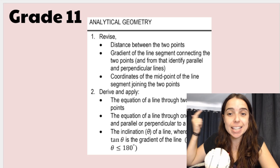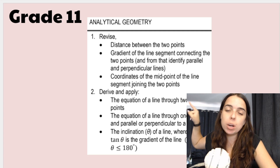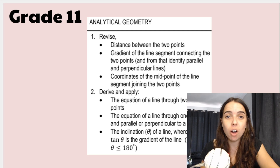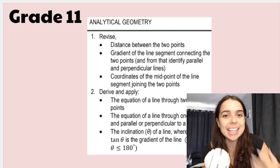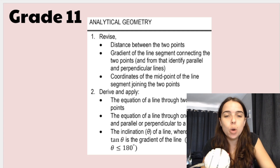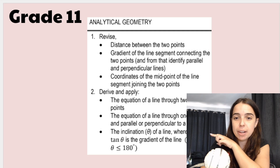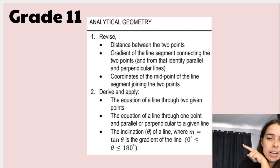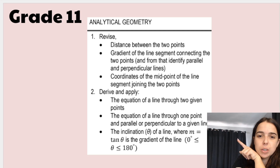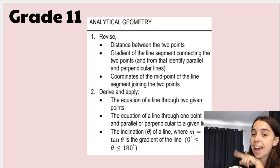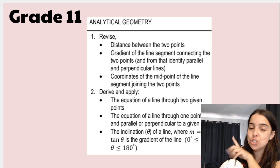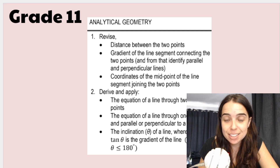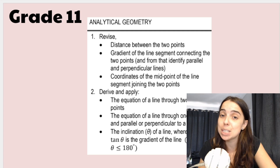Then we've got analytical geometry, and point number one says you need to revise all the stuff you did in grade 10, because it's not gone and forgotten — we're going to be using it again in grade 11. In addition to that, we also derive and apply the equation of a line through two given points, the equation of a line through one point parallel or perpendicular to a given line, and the angle of inclination. But you need to know the grade 10 stuff as well, so go over it and practice past papers.